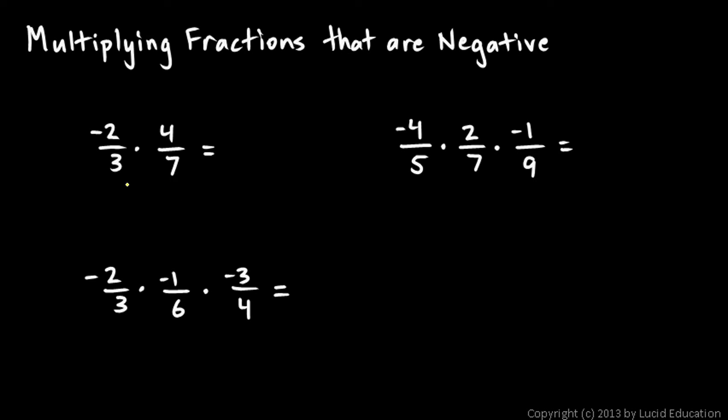In this first one, I notice that I have a negative and a positive, so the result will have to be a negative number. Then I proceed to do the multiplication. 2 times 4 is 8, and 7 times 3 is 21. Just as before, we multiply the numerators and multiply the denominators. So, we get 8 over 21, and this has to be negative 8 over 21.